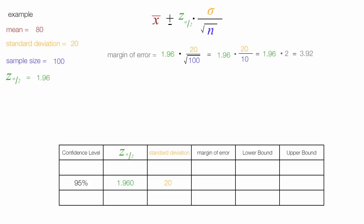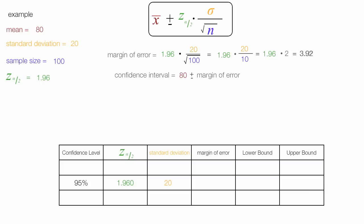Now I'm going to calculate the confidence interval. The confidence interval is equal to 80 plus or minus the margin of error. We know the margin of error is 3.92. So the lower bound is 80 minus 3.92, which equals 76.08. The upper bound is 80 plus 3.92, which equals 83.92. The margin of error is 3.92, with lower and upper bounds noted.